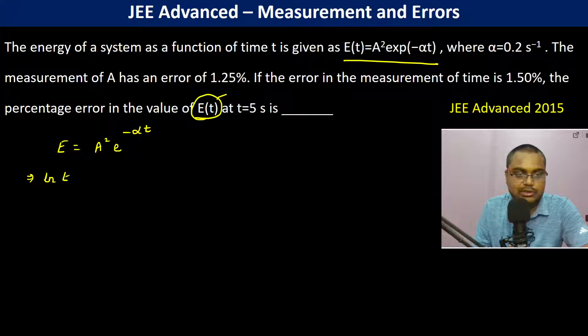So take ln on both sides, so it is ln E is equal to ln of A square plus ln of e to the power minus alpha t. So this is going to be ln E is equal to 2 into ln A minus alpha t.